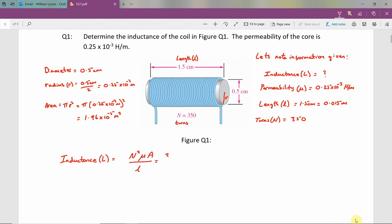So plugging in the values, that gives us the number of turns squared, that's 350 squared, times the permeability, which is 0.25 multiplied by 10 to the power minus 3 Henry's per meter, times the area, which is 1.96 multiplied by 10 to the power minus 5 meters squared, all divided by the length, which is 0.15 meters.